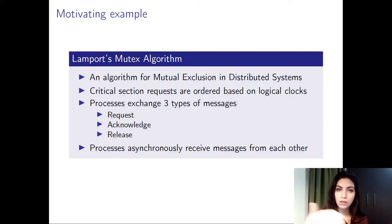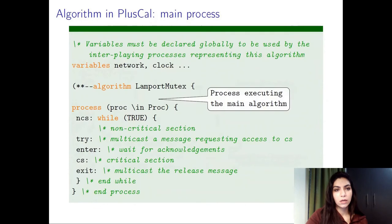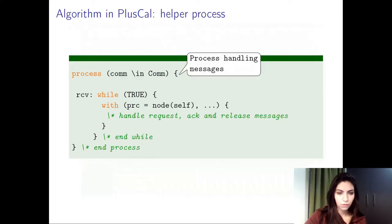Once all acknowledgements are received, it enters the critical section, executes its part, and when it leaves, it notifies all other processes that the critical section is now released. If we're going to model this algorithm in PlusCal, we need two process types. The first process type carries out the main algorithm. We can see here that we have a non-critical section and then a try step where you multicast a message requesting access to the critical section. In the following step, you wait for acknowledgements from all other processes. Once you get all your acknowledgements, you can move forward and enter the critical section. Eventually when you exit, you again multicast a release message for all processes, notifying them that the critical section is now released.